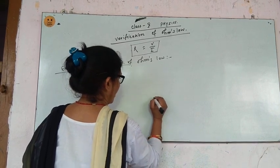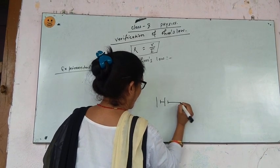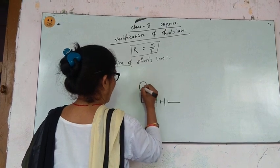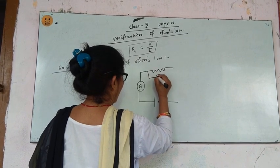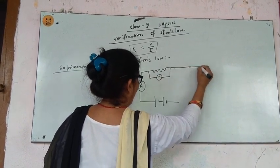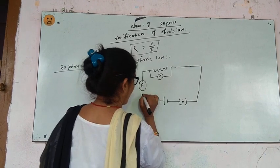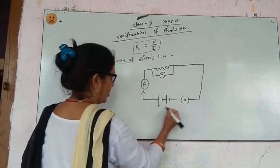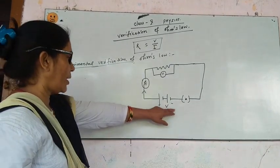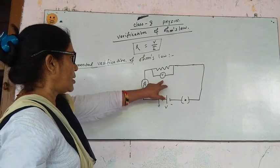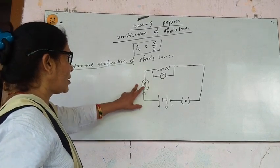Ohm made a circuit. In this circuit, the value of potential difference is changed continuously. There is an ammeter, a resistor connected with a voltmeter, and a key. When the key is closed, current flows in the circuit from positive to negative terminal. The battery is the source of current and gives the value of potential difference, which is measured by the voltmeter. The voltmeter is always connected in parallel and the ammeter is connected in series.